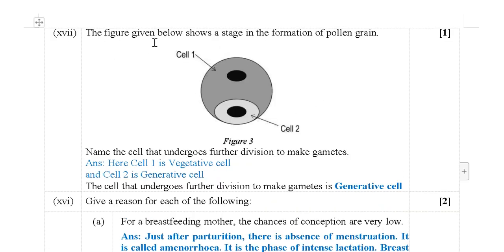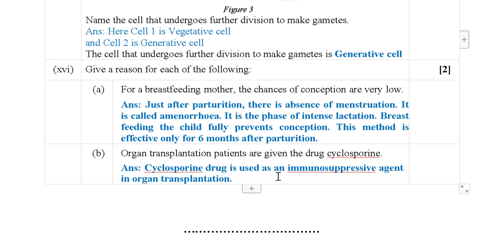Next: A figure shows a stage in the formation of a pollen grain. Name the cell that undergoes further division to make gametes. In the diagram, Cell 1 indicates the vegetative cell and Cell 2 indicates the generative cell. The generative cell undergoes further division to form the male gametes.